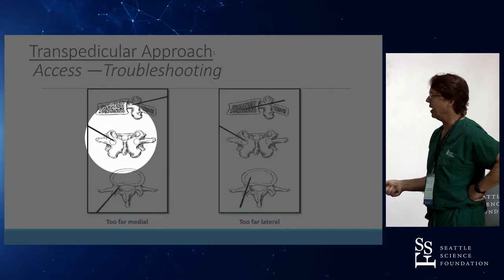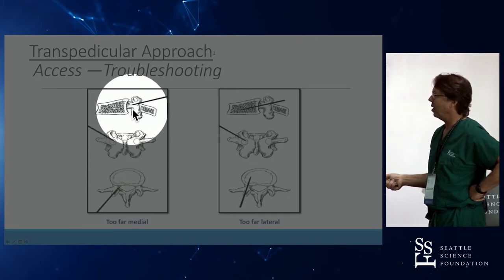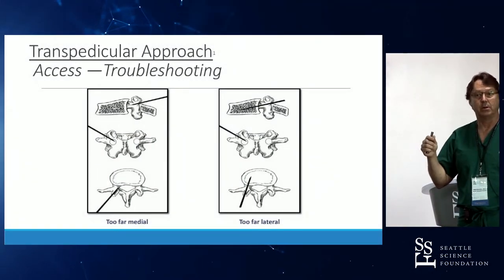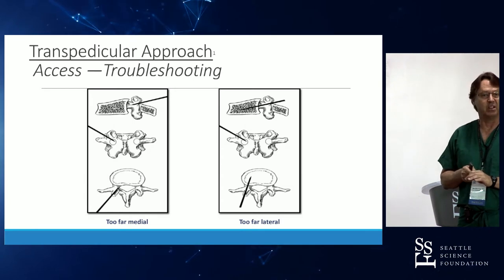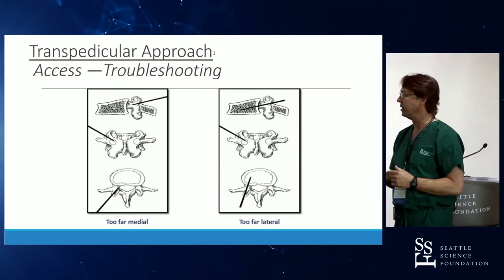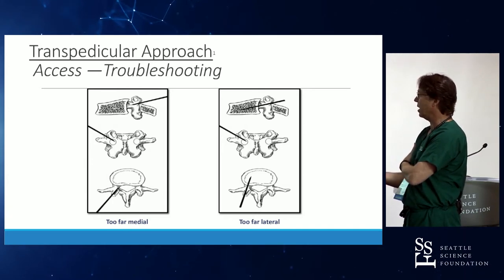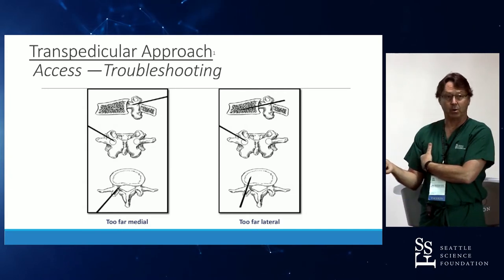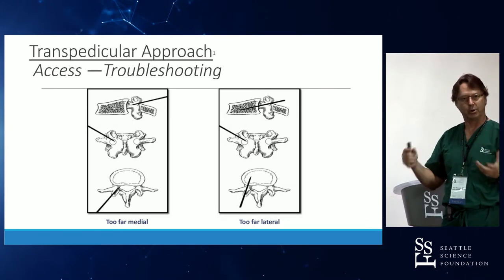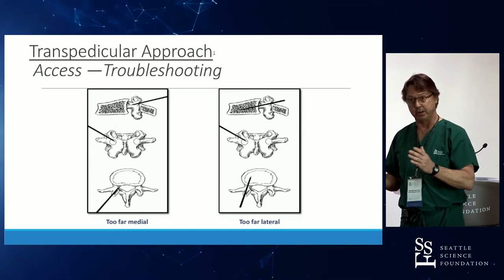If you approach the medial border of the pedicle on the AP and you are well above it, your start point is too lateral. All you do is lift, migrate one or two millimeters more medially, and start the exact same trajectory with a slightly more medial starting point. These are examples of being too far medial or too far lateral — and if you are, where you deploy your balloon, your device, or your pedicle screw will ultimately end up too far medial or too far lateral.